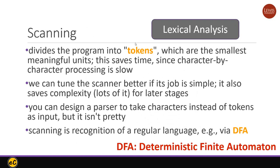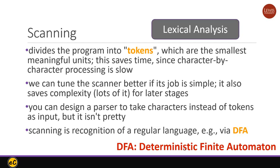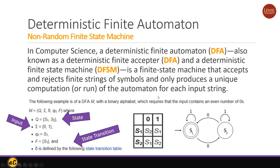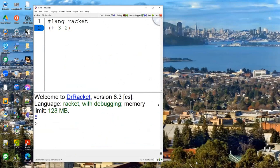The first stage is tokenization. Tokenization divides the program into tokens, which is the smallest meaningful unit — we call them words. To create that, we actually need to use a deterministic finite automaton, and here we have the finite state machine. The details of this will be described in Lecture 10. So that's the first stage of the compilation. Lecture 10 is on tokenization.